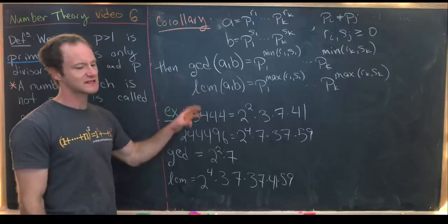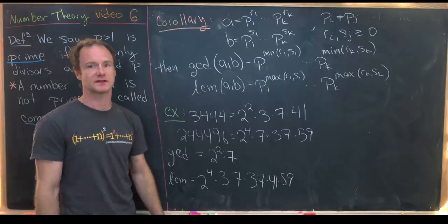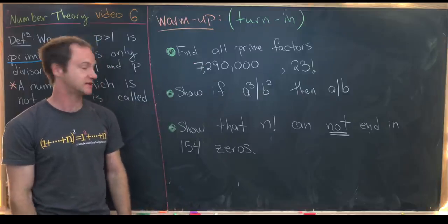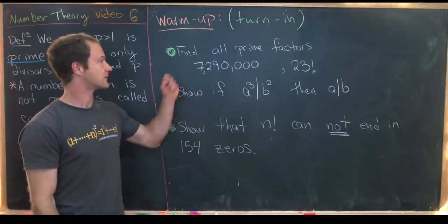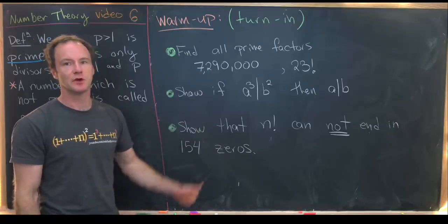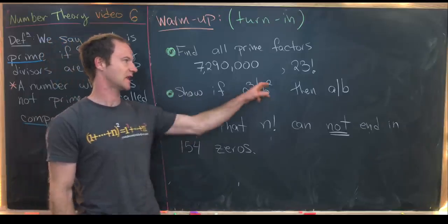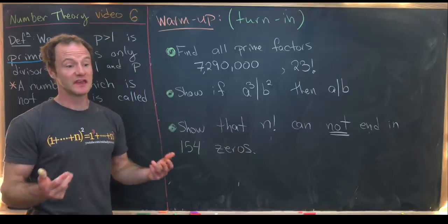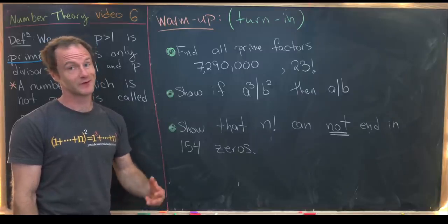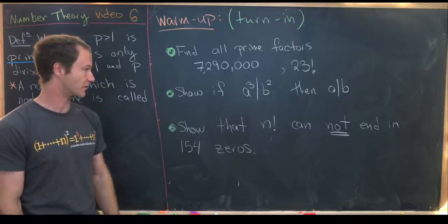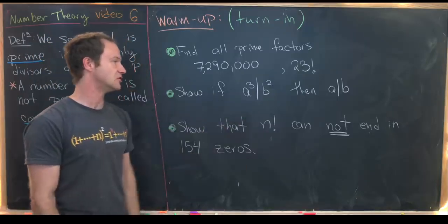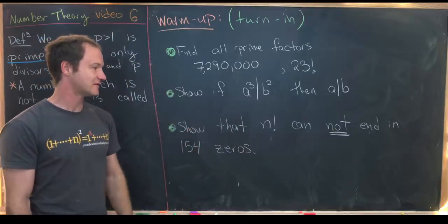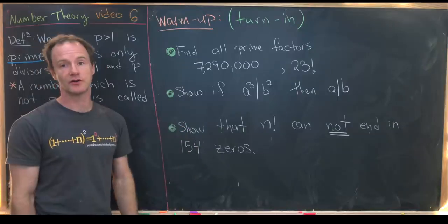Here are some warm-up problems for the next class. First, find all prime factors of 7,290,023 and 23 factorial. Second, using the Fundamental Theorem of Arithmetic, show that if a³ divides b², then a divides b. Third, show that n factorial cannot end in exactly 154 zeros.